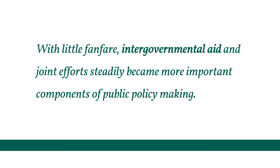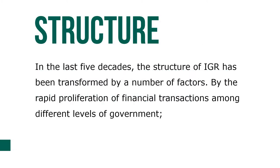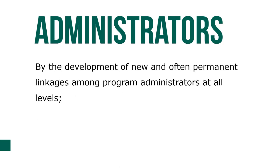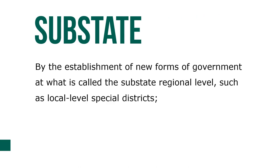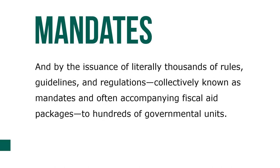With little fanfare, intergovernmental aid and joint efforts steadily became more important components of public policy making in the last five decades. The structure of IGR has been transformed by the rapid proliferation of financial transactions among different levels of government, the development of new and often permanent linkages among program administrators at all levels, the establishment of new forms of government at the sub-state regional level such as local special districts, and the issuance of thousands of rules, guidelines, and regulations — collectively known as mandates — often accompanying fiscal aid packages.